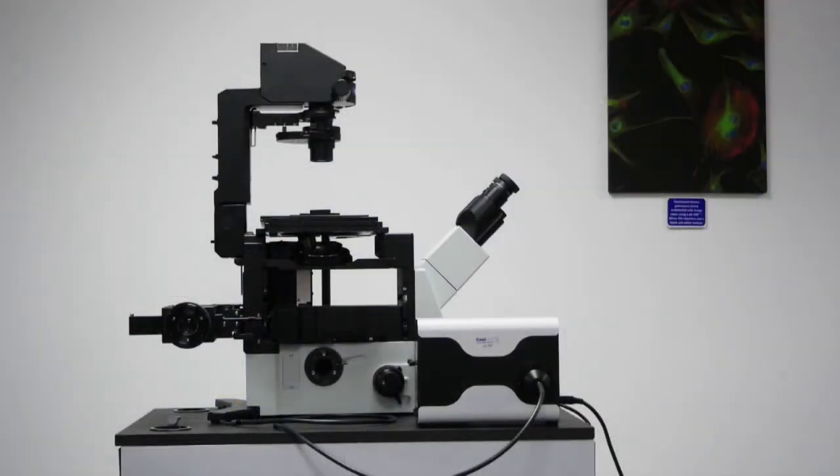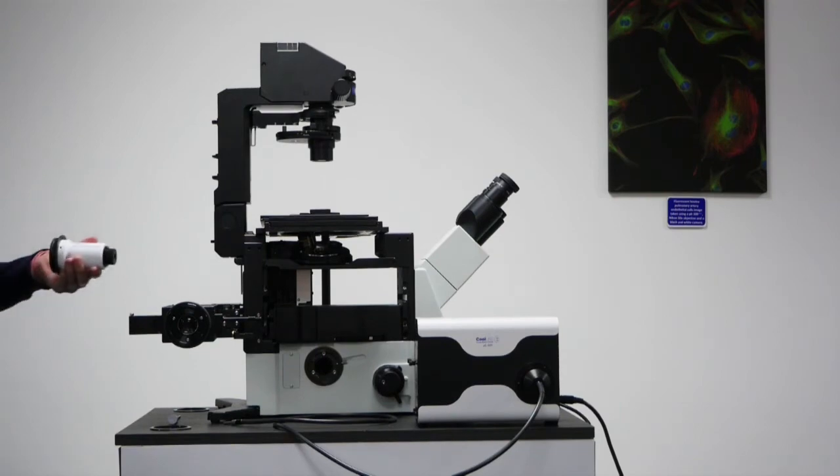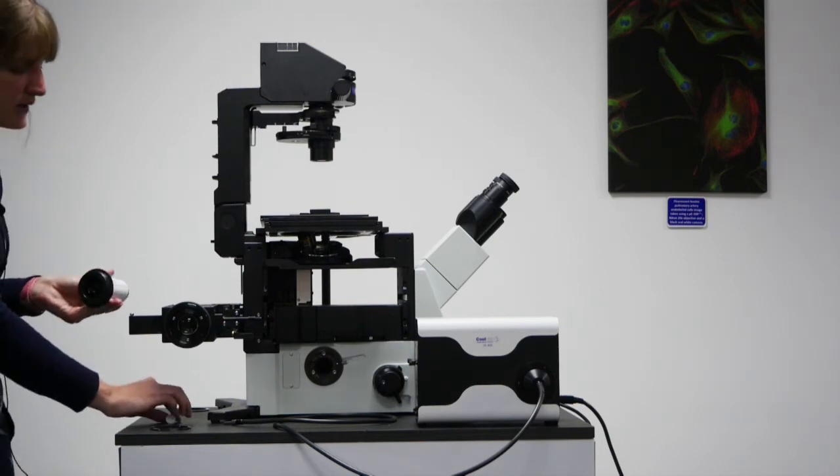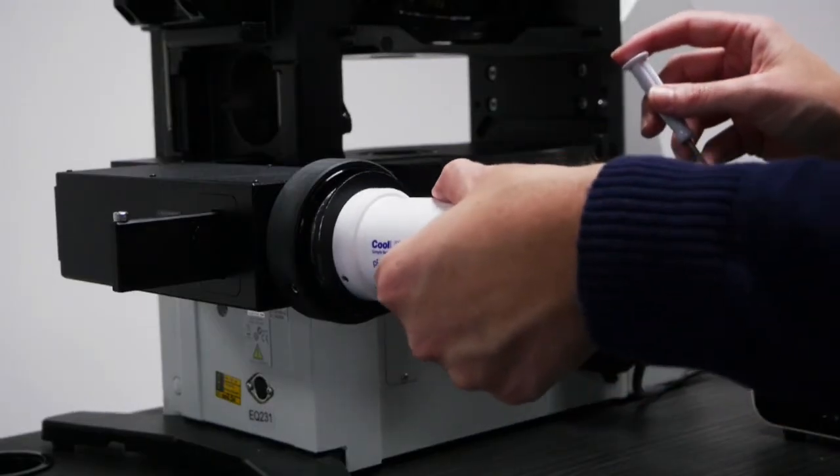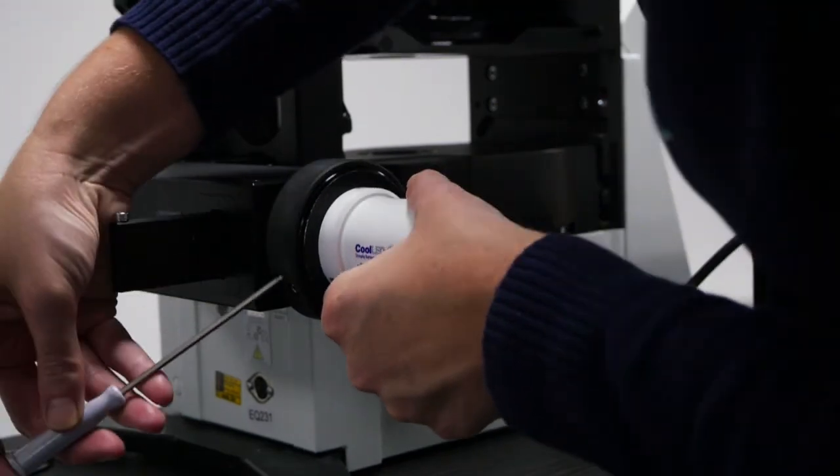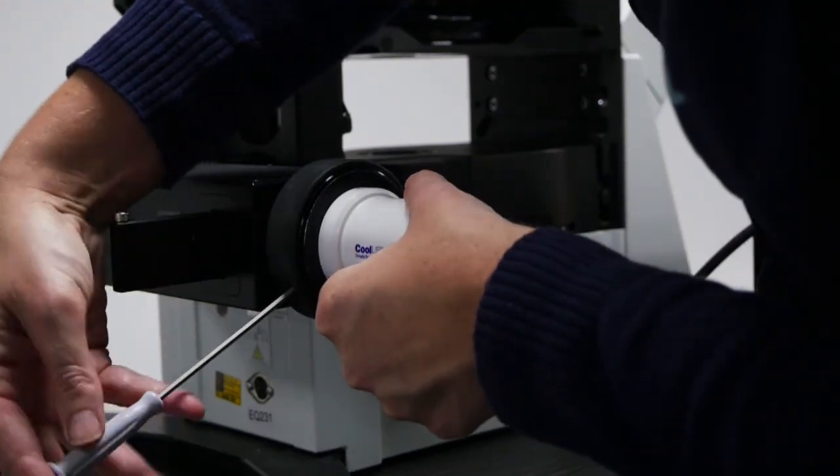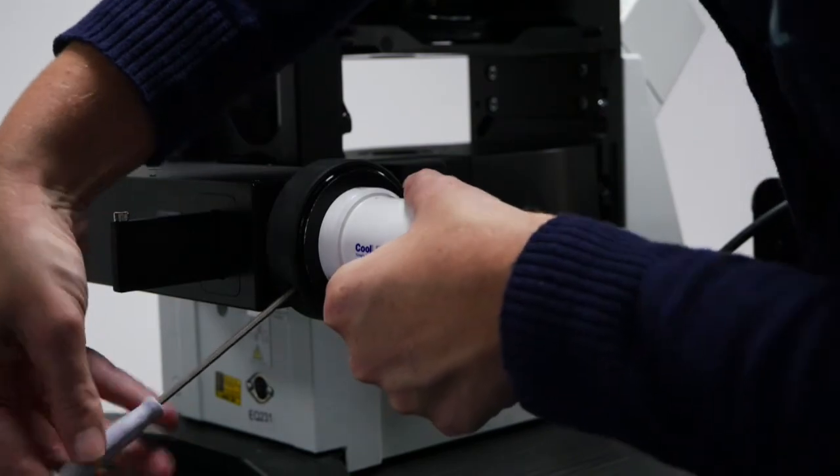Another option is to use the CoolLED PE universal collimator and this is attached to a 50E adapter. It fits in the same way as before, just slots in and then you attach and secure using the grub screws.